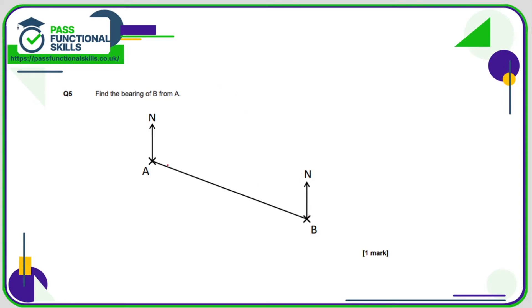Here we want the bearing of B from A again, so it's this angle here. This would be 90 degrees, so this angle is greater than 90 degrees. And if we stick our protractor here and take a measurement, we'll realize the angle is 110 degrees. So the bearing is 110 degrees.